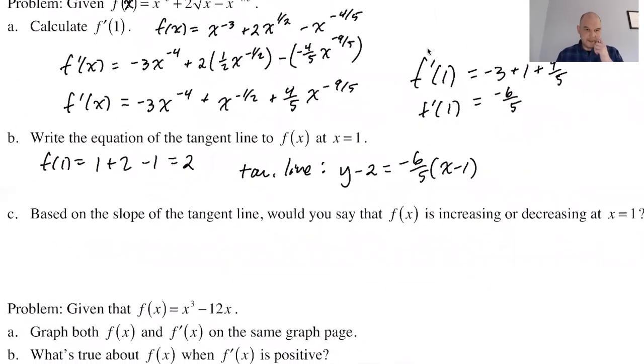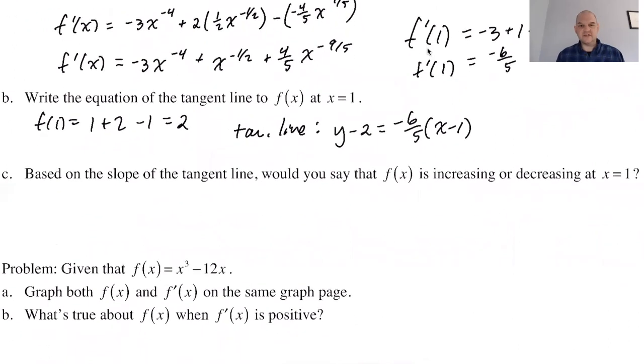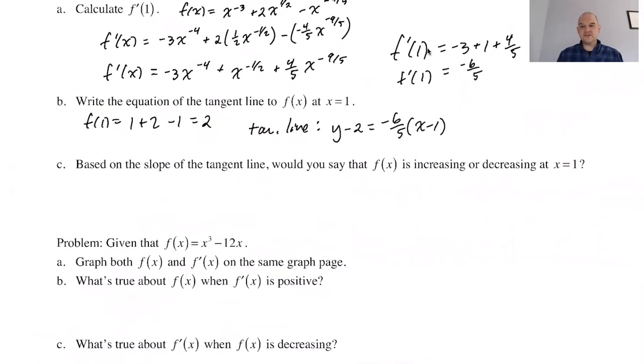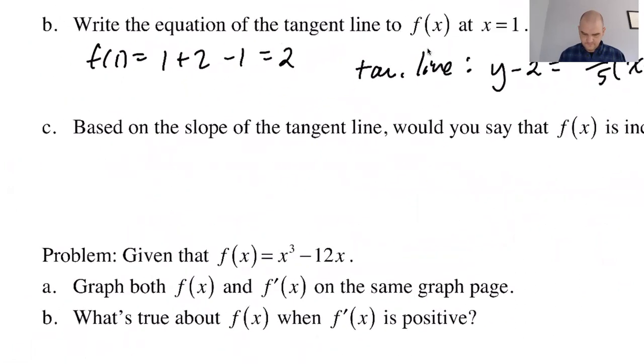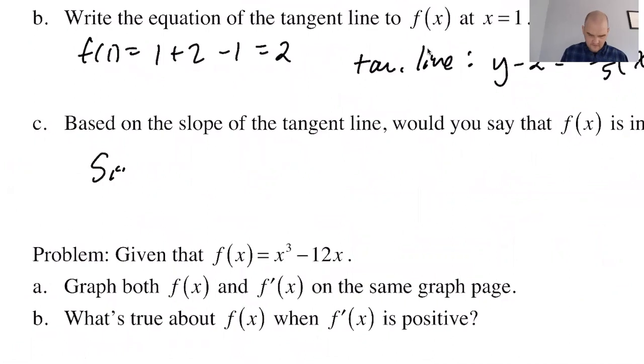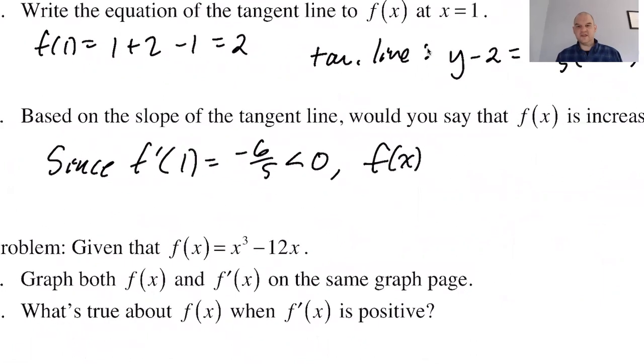Now based on the slope of the tangent line, would you say that f of x is increasing or decreasing at x equals 1? Probably want to justify this, so I'm gonna say: since f prime of 1 equals negative 6/5, which is less than 0, f of x is—if the slope is negative, the function is decreasing.